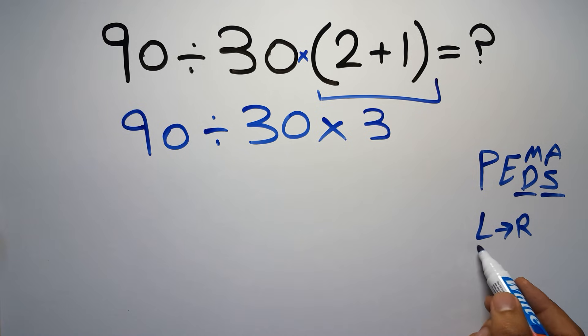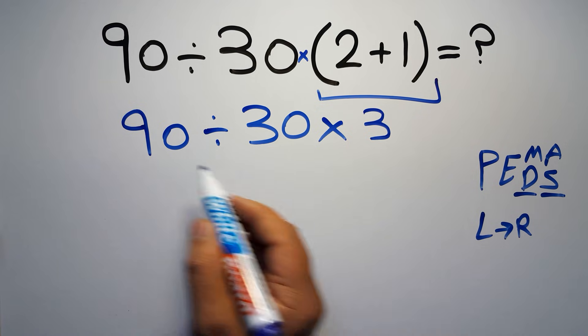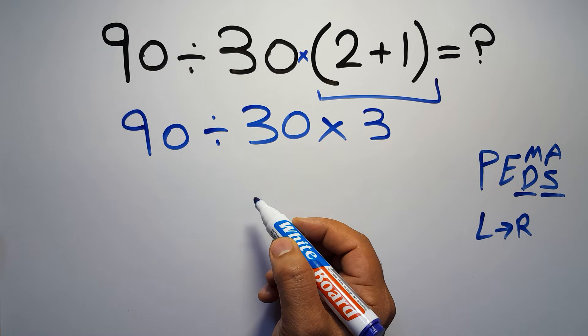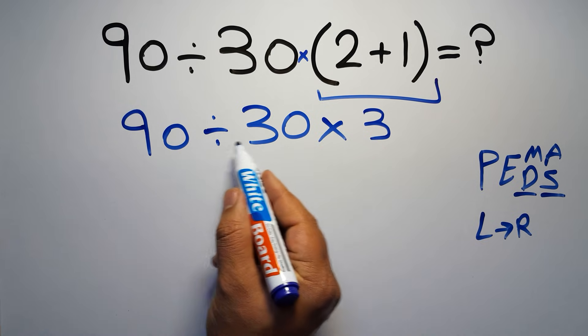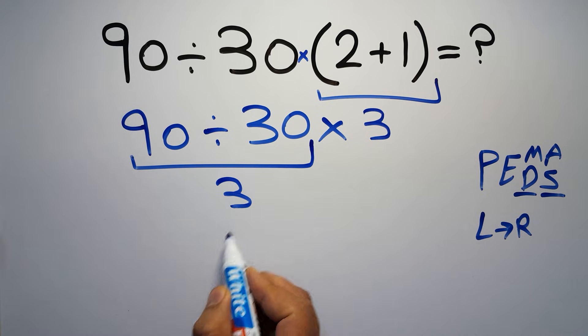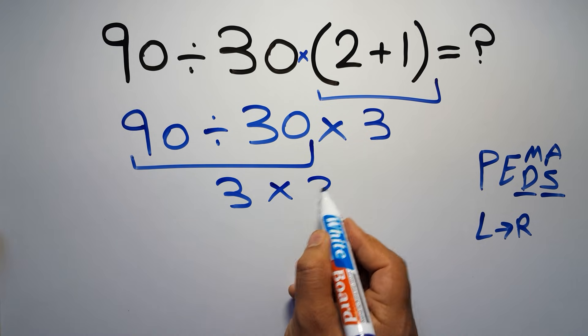Now we have one division and one multiplication. Multiplication and division have equal priority and we have to work from left to right, so first we do the division: 90 divided by 30 equals 3. So 3 times 3.